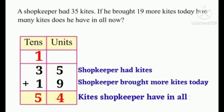Now next example. A shopkeeper had 35 kites. If he brought 19 more kites today, how many kites does he have in all now? Shopkeeper had 35 kites and brought 19 more kites today. So first add in the unit place: 5 plus 9 is equal to 14. So we write 4 in the unit place and 1 carried over in the tens place. Now in the tens place: 1 plus 3 plus 1 is equal to 5 tens. So the shopkeeper has 54 kites in all.